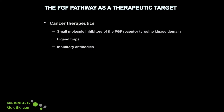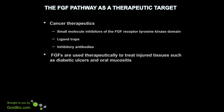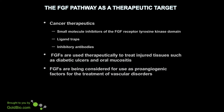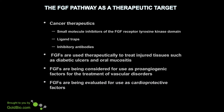The FGF pathway can also be used as a therapeutic target. In cancer therapeutics, small molecule inhibitors of the FGF receptor tyrosine kinase domain are being tested. Ligand traps — soluble extracellular versions of the FGF receptor — are introduced to bind FGF ligands and prevent them from binding to the endogenous receptor on cancer cells. Inhibitory antibodies are also being tested that bind to the receptor or ligand to prevent ligand-receptor interactions. Additionally, FGFs are used therapeutically to treat injured tissue such as diabetic ulcers and oral mucositis, are being considered as pro-angiogenic factors for vascular disorders, and are being evaluated as cardioprotective factors.